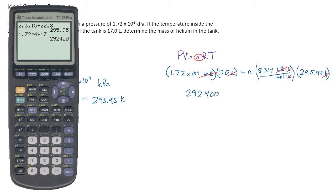That is equal to n times this other combination of 8.314 times 295.95, which gives us 2460.53.